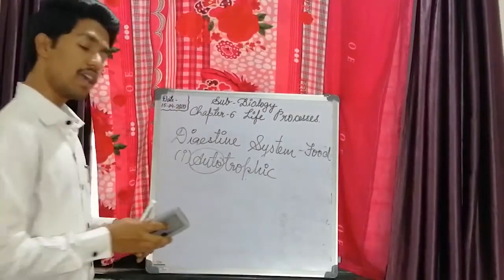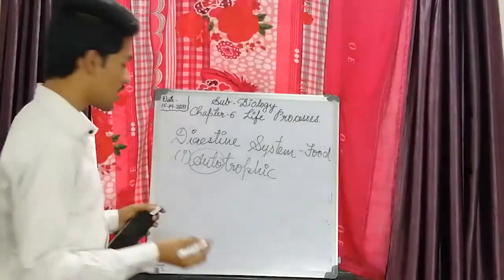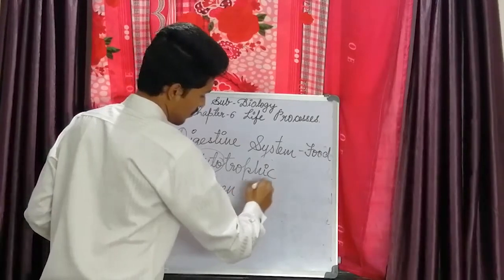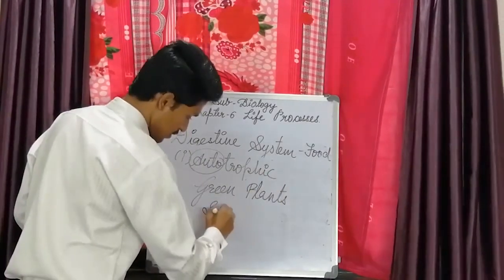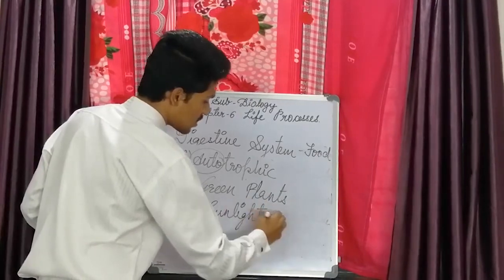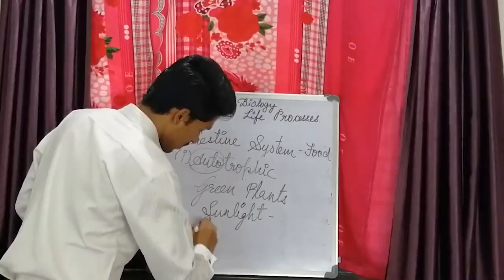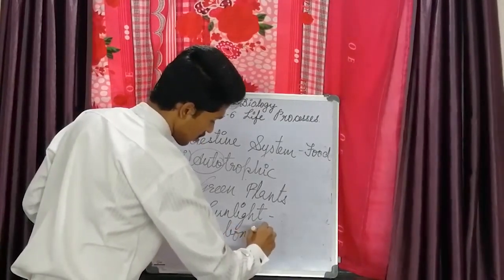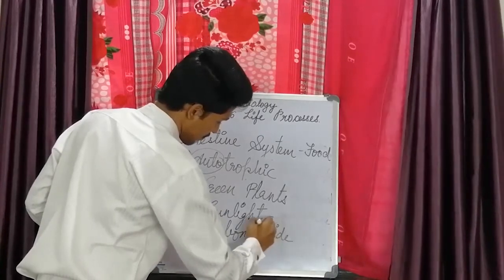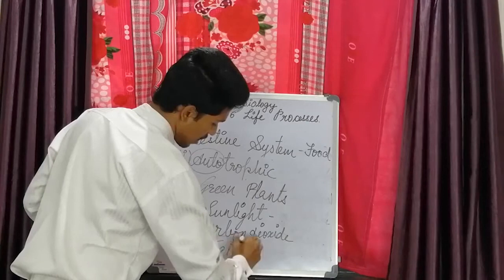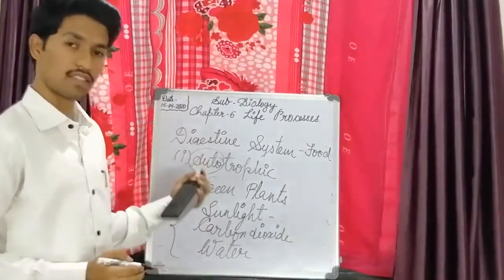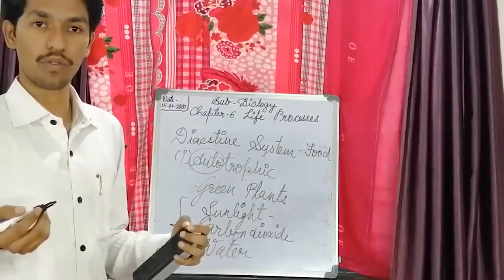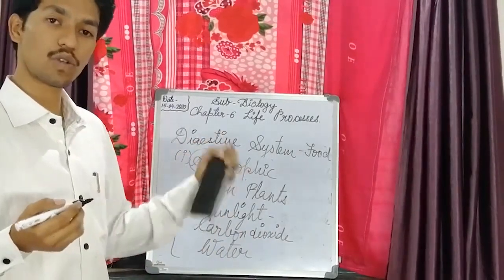First, we are going to study autotrophic mode of nutrition. As I told you, plants — the green plants — they use sunlight, which is the major source of energy, that is light energy. They also use carbon dioxide and water. When these green plants use these three essential things, they can produce food on their own. They perform a process called photosynthesis.